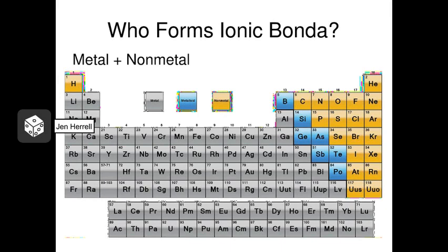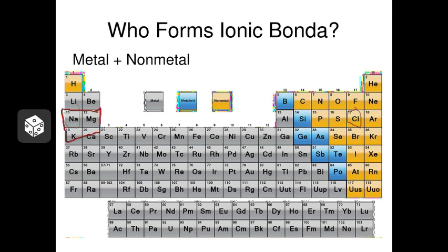Ionic bonds tend to form between metals and nonmetals. The nonmetals include hydrogen and all the elements in orange from the right side of the periodic table. The metals are the ones in gray. In table salt, we had a metal — sodium — and a nonmetal — chlorine — making that bond. Ionic bonds are most common between elements in the first and second columns, which have one or two extra electrons they like to give away, and elements on the right side that have one, two, or three electrons they would love to receive.